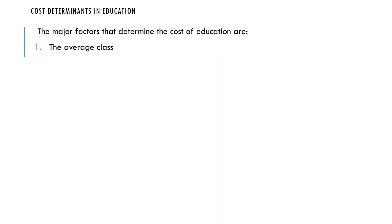The same goes for laboratory buildings, classrooms, workshops, and other facilities. Now let us look at the average cost of classroom construction. When considering the average cost of a classroom, you must know the number of students that are going to sit in there, then consider how much will be used. You also have to determine the type of structure, because one structure may differ from another and therefore bring differences in price.